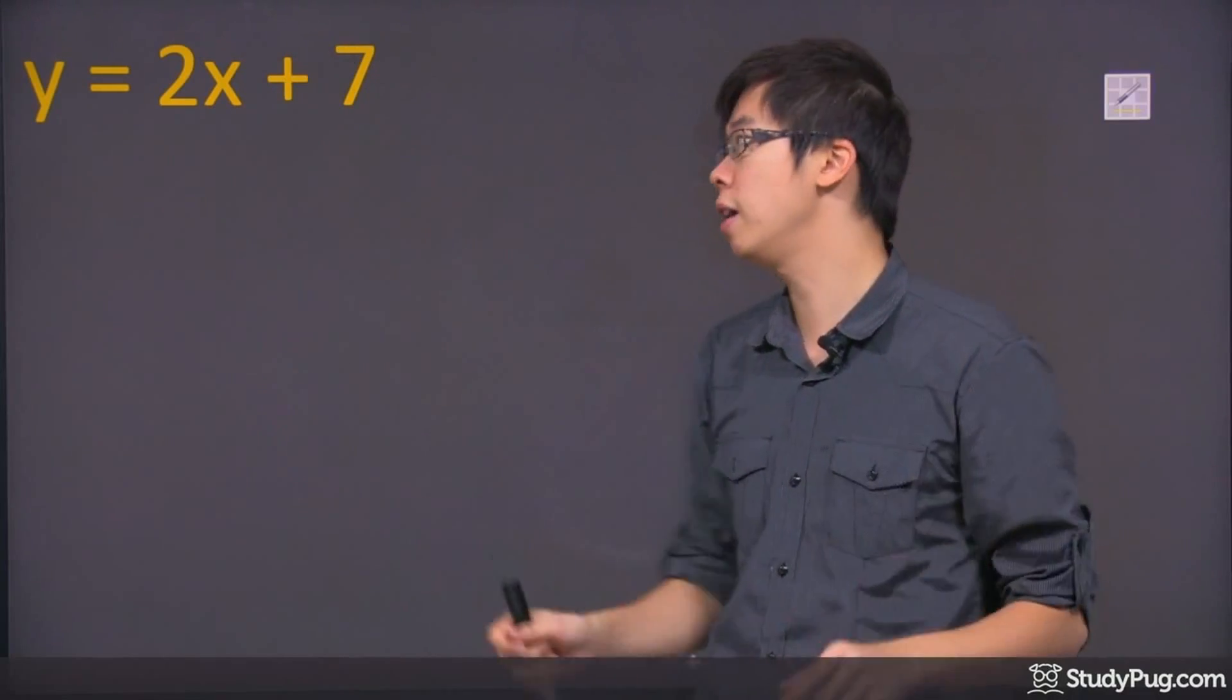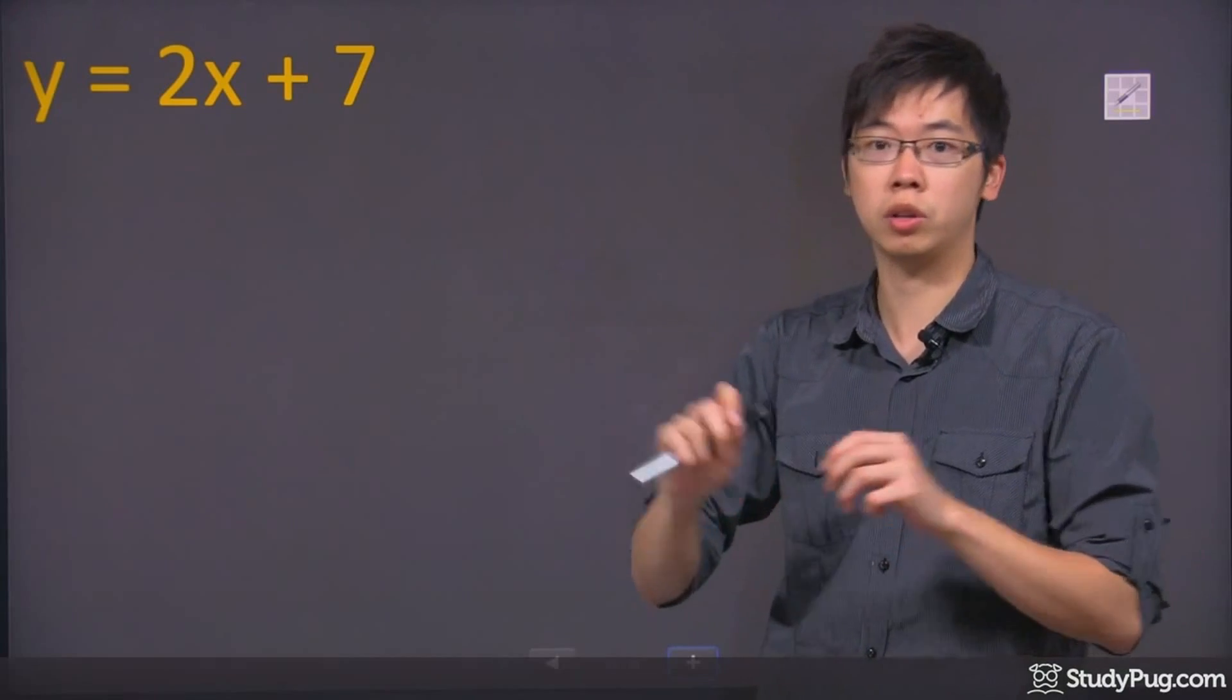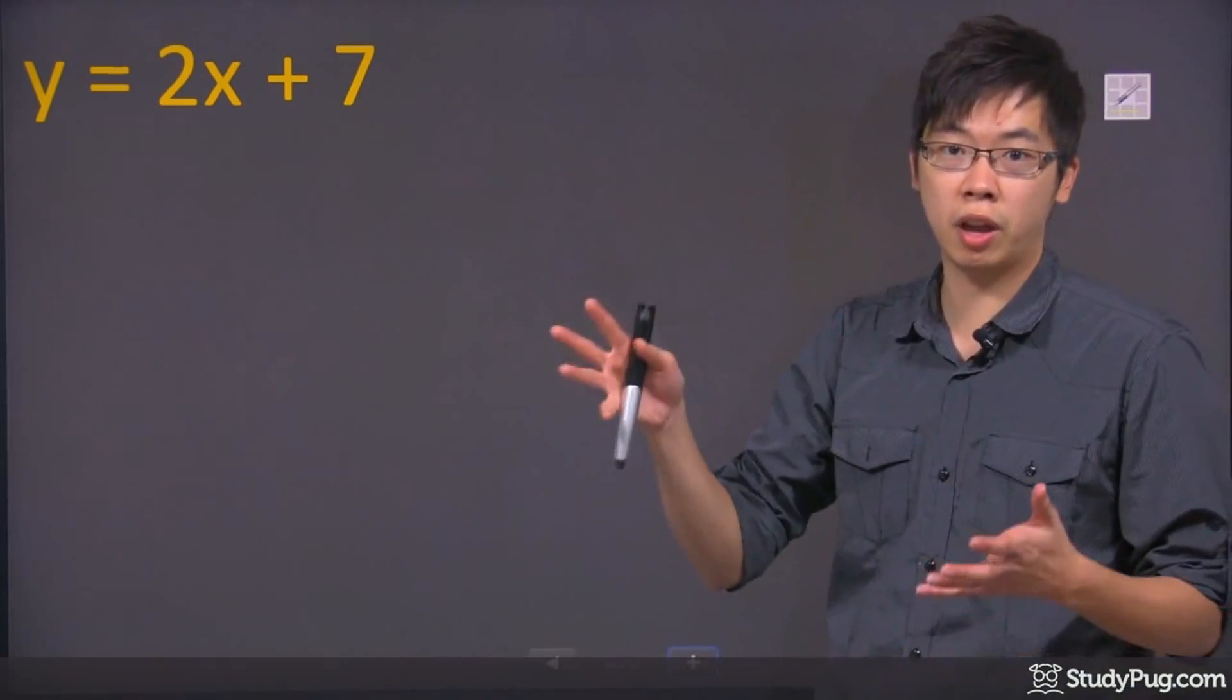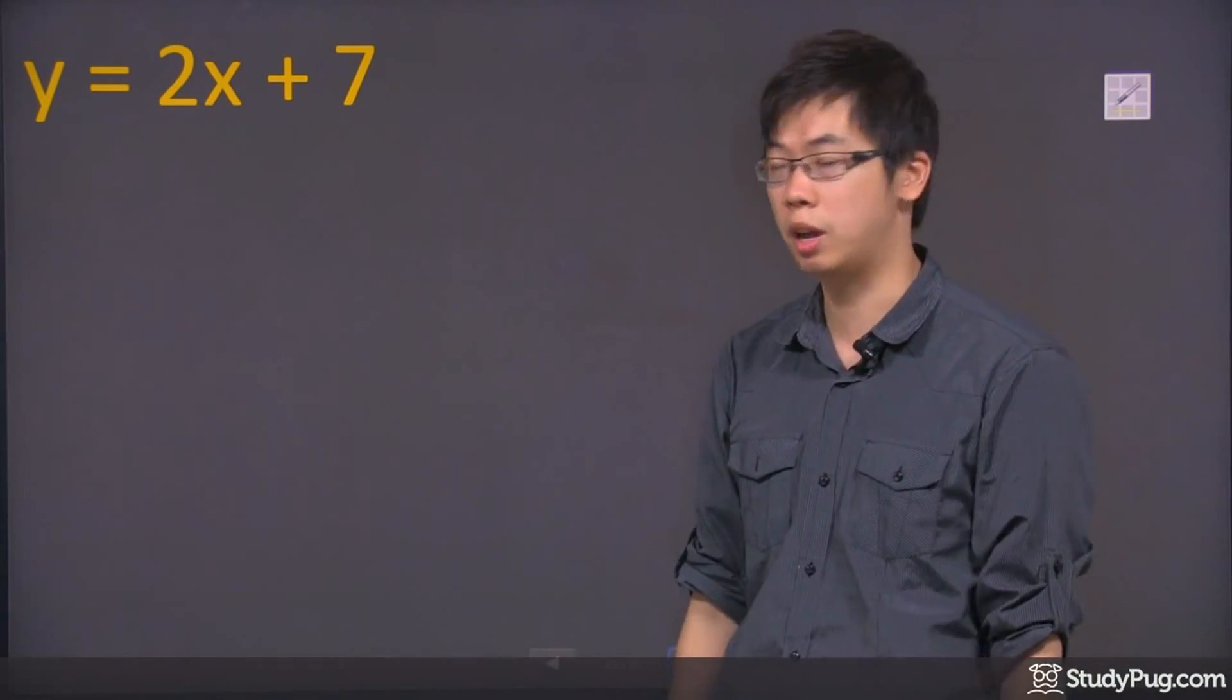I don't know which way it's going to go, but as long as you have two points, you can draw a straight line. That's why they're making you figure out the x and y intercept - because that gives you two points, and you can connect them to get a straight line.